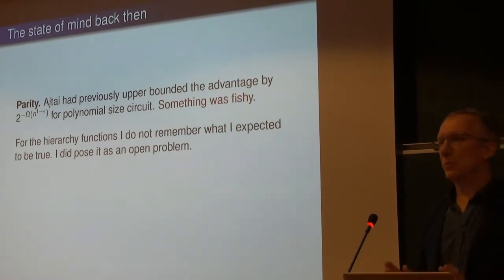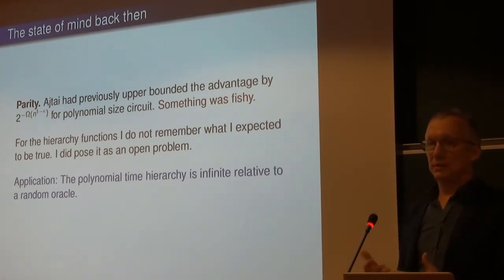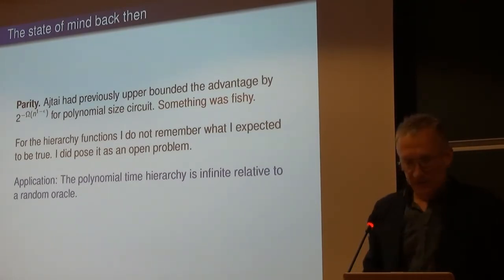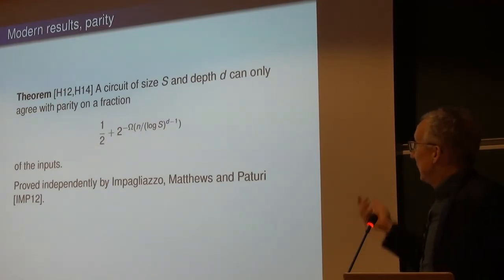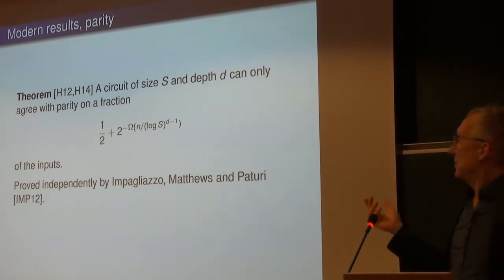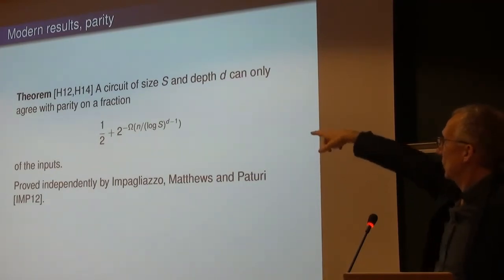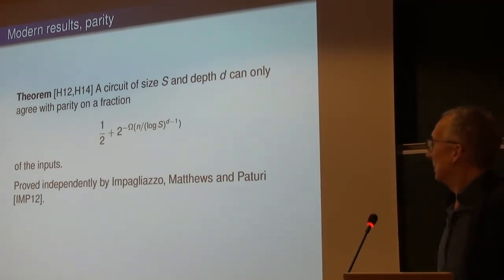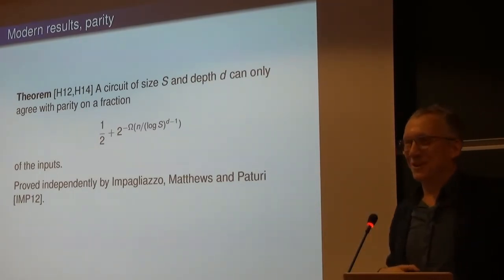Whether I thought better average-case lower bounds would be possible, I'm not sure. One application of such lower bounds is that the polynomial time hierarchy is infinite relative to a random oracle. Then about five years ago, we could actually get much stronger lower bounds — the correct expression is N over a power of log of the circuit size for the correlation. The conference version was obtained independently by Impagliazzo, Matthews, and Paturi in 2012, and we made the journal version.